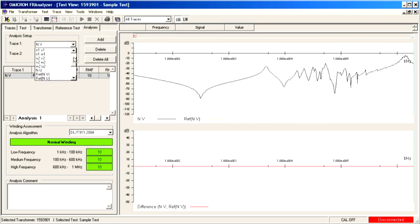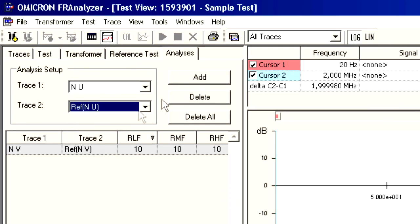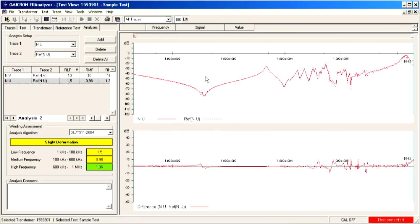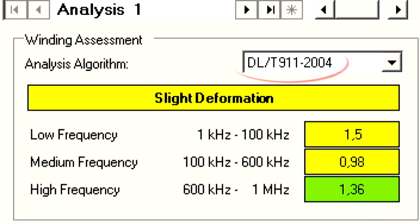The implemented assessment algorithm provides a powerful tool to make quick evaluation of FRA measurements. The algorithm is based on the standard DL911-2004 by the National Development and Reform Commission of the People's Republic of China. Experience and scientific investigations have proved its reliability.